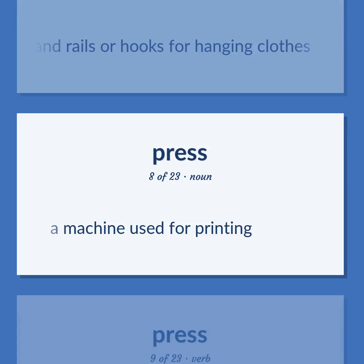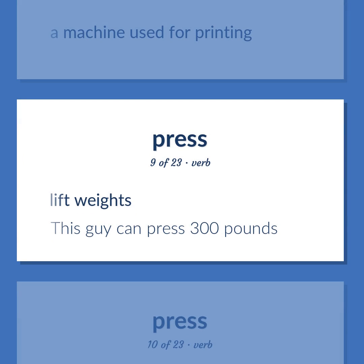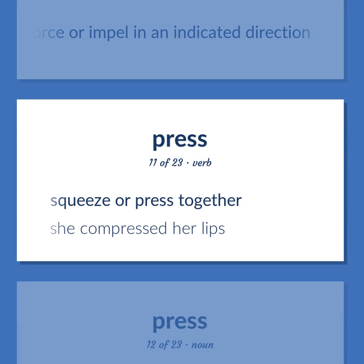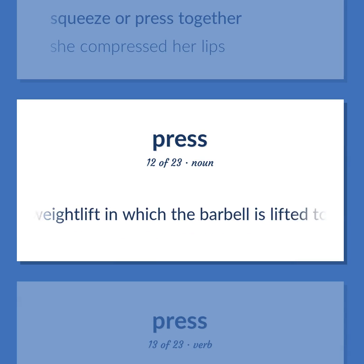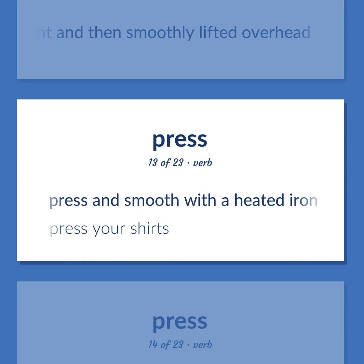Press (continued). A tall piece of furniture that provides storage space for clothes; has a door and rails or hooks for hanging clothes. A machine used for printing. Lift weights — this guy can press 300 pounds. Force or impel in an indicated direction. Squeeze or press together — she compressed her lips. A weight lift in which the barbell is lifted to shoulder height and then smoothly lifted overhead. Press and smooth with a heated iron — press your shirts.